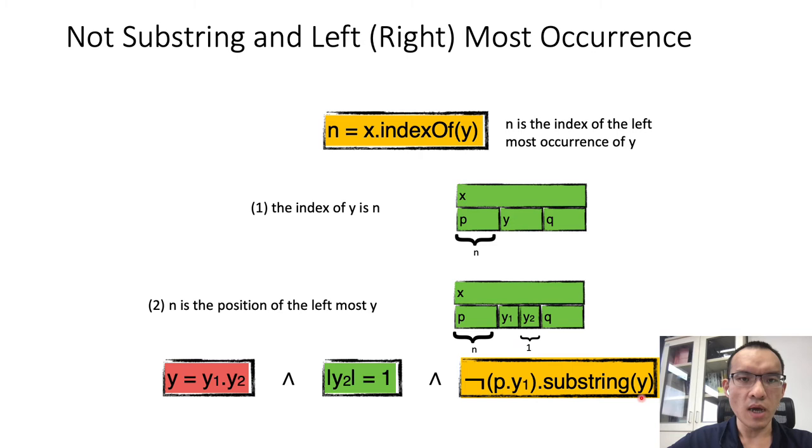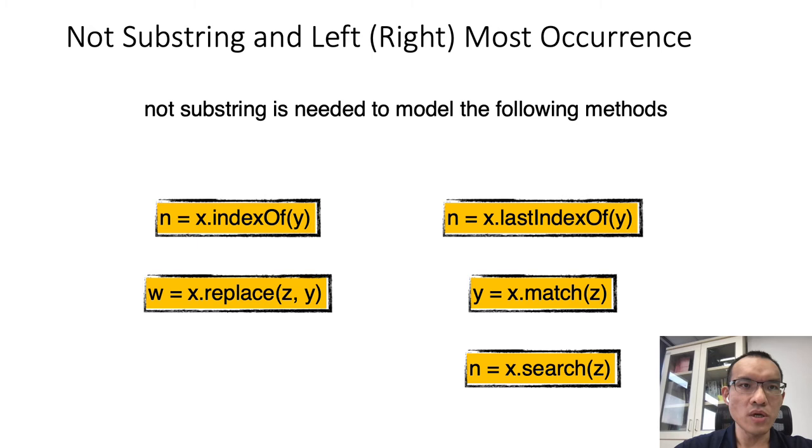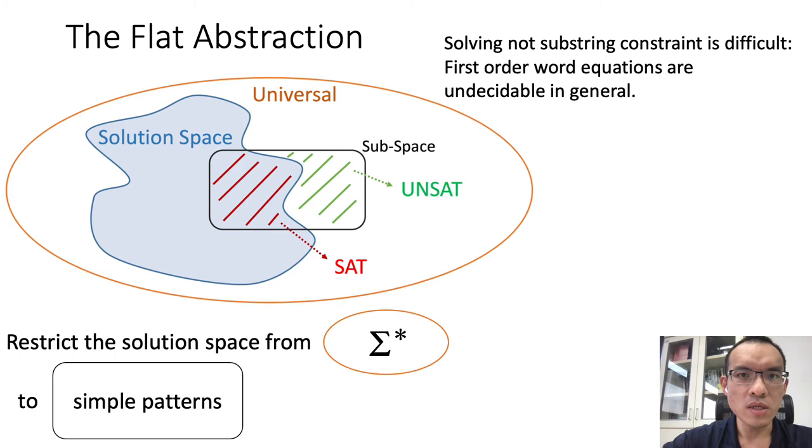In many string functions we need to express the left or right-most occurrence. Therefore we need the not-substring relation. Now we know solving not-substring constraint is important in modeling programming languages. We also know it is difficult. One evidence is first-order word equations are undecidable in general.